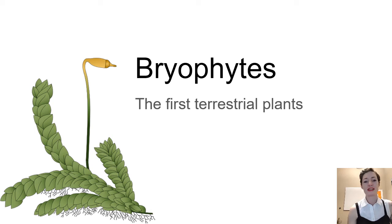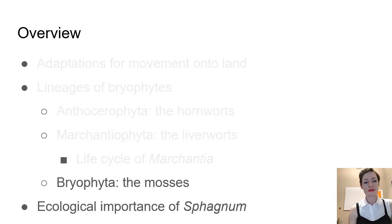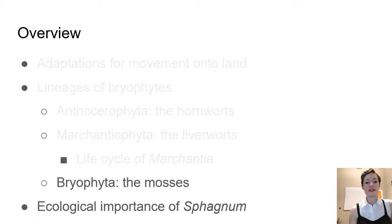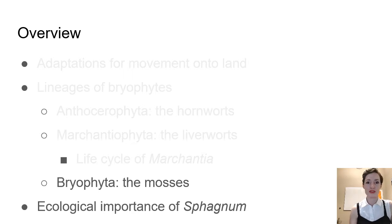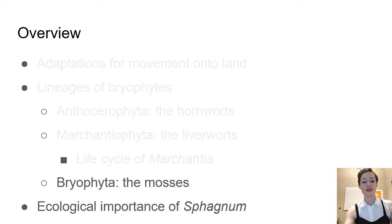This is the third video looking at the bryophytes, our first group of terrestrial plants. In this video we're going to look at the bryophyta, the mosses. Even though bryophytes and bryophyta seem like the same term, the bryophyta are just one component of bryophytes in general, so that can be confusing. At the last part of this we'll look at the ecological importance of sphagnum, which is a type of moss.